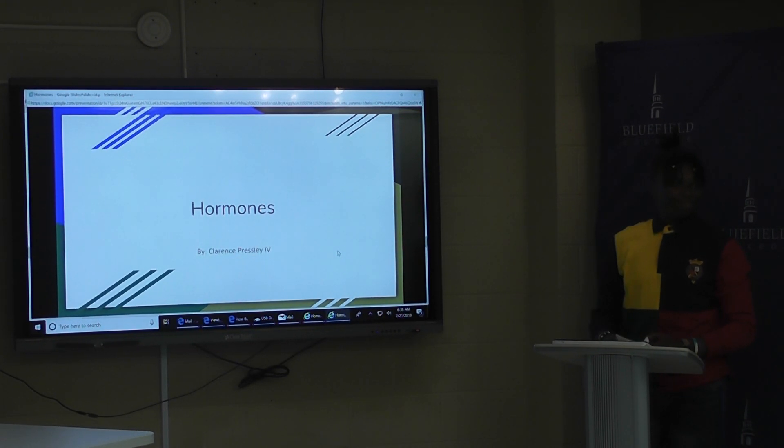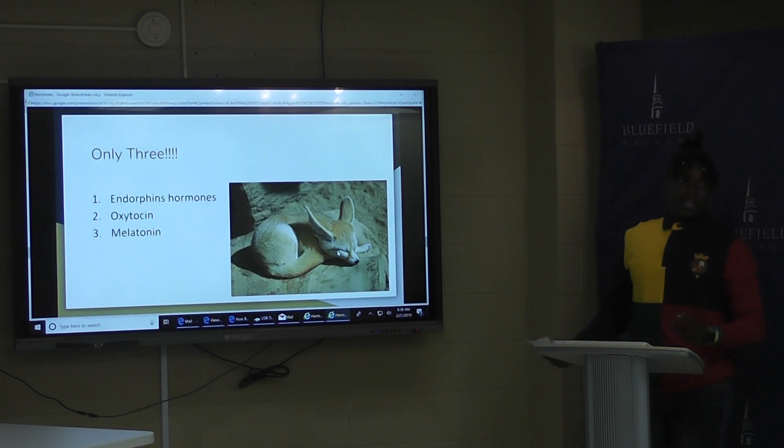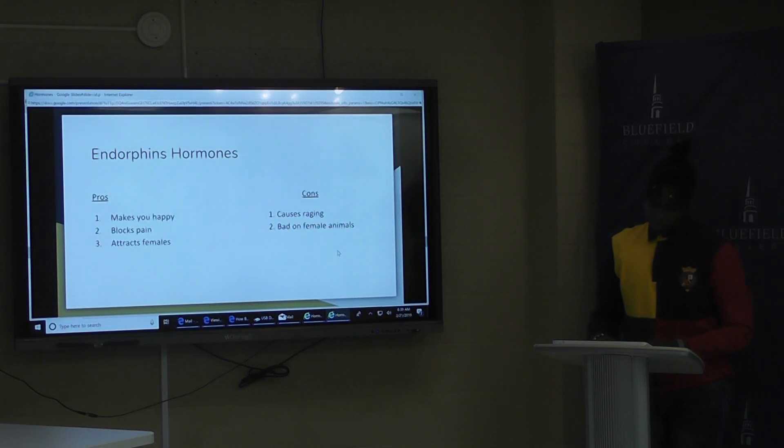So, hormones. Who has them? First things first, a hormone is a regulated substance produced in an organism and transported in tissue fluids such as blood. Today I could have came up here about a million hormones, but I'll narrow it down to three. Three hormones I'm going to talk about is endorphins hormone, oxytocin, and melatonin.